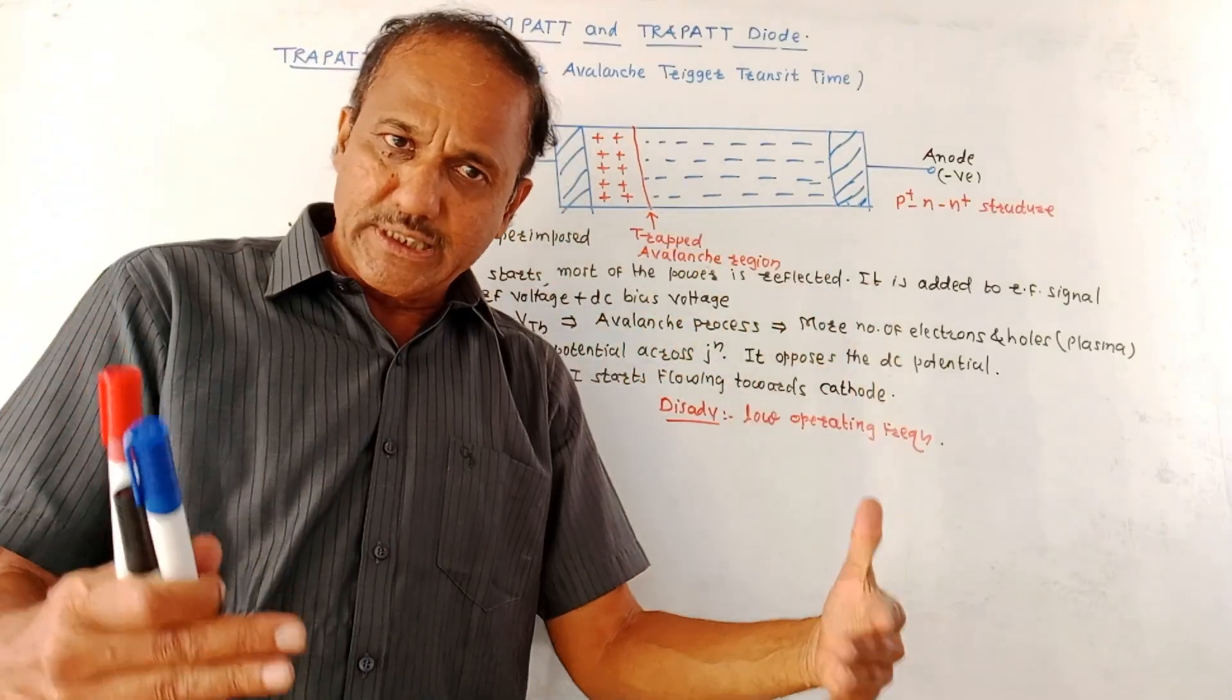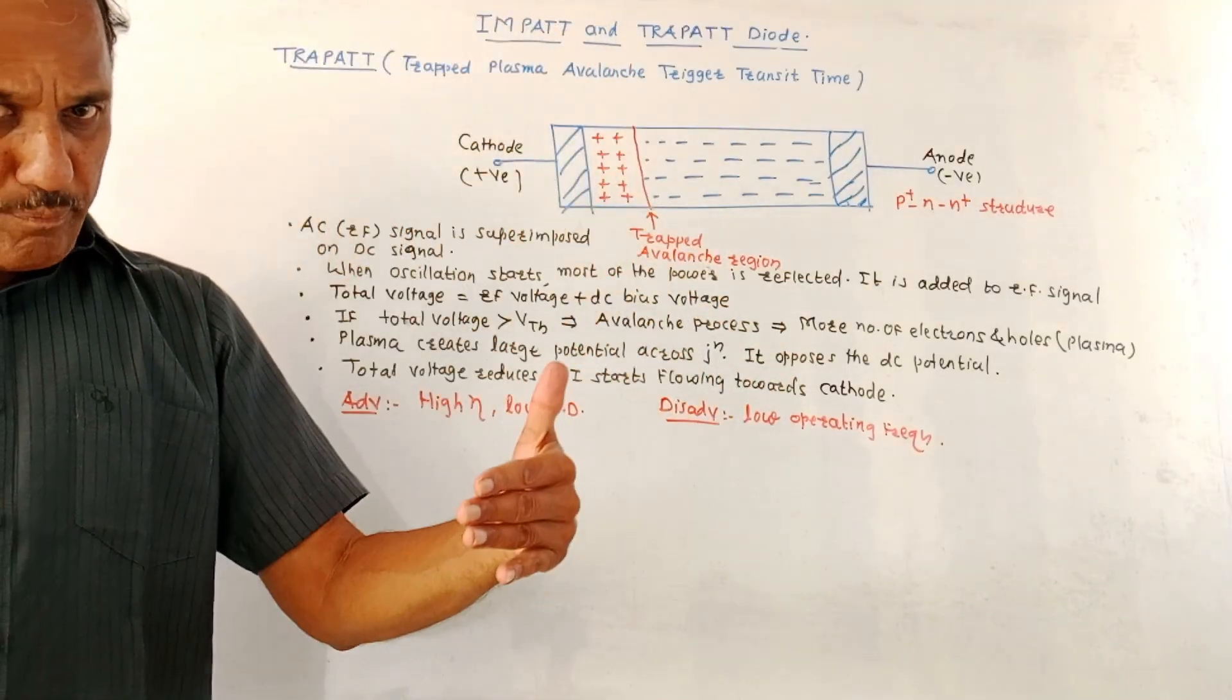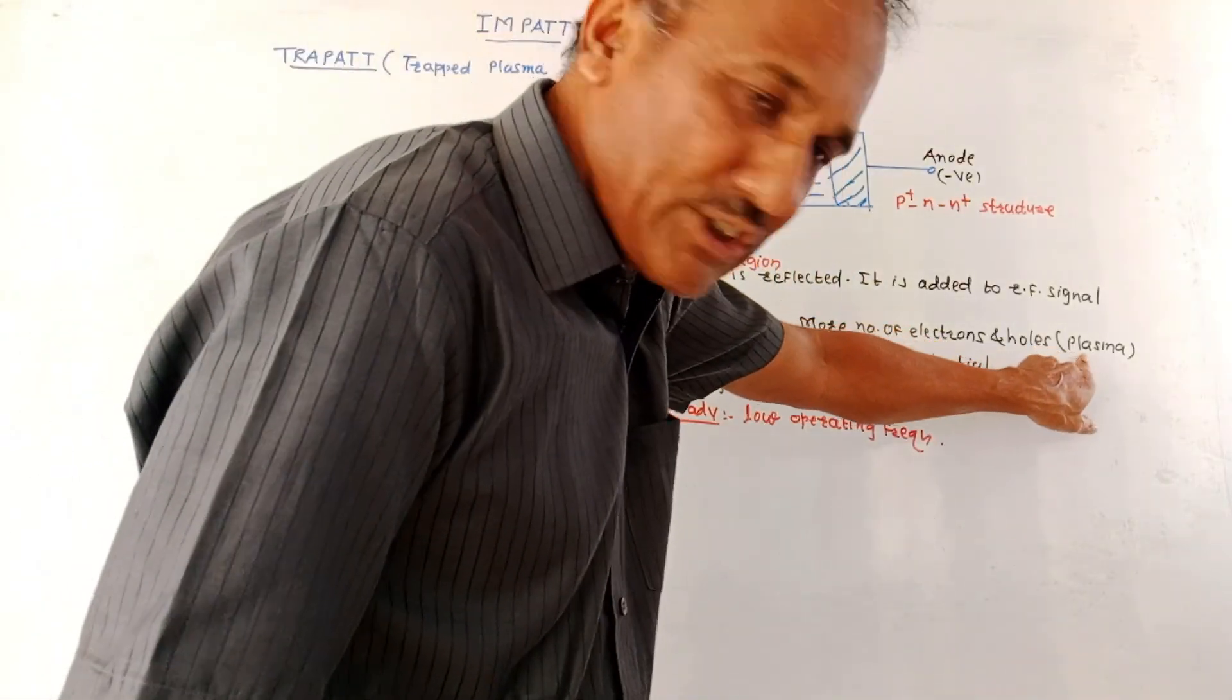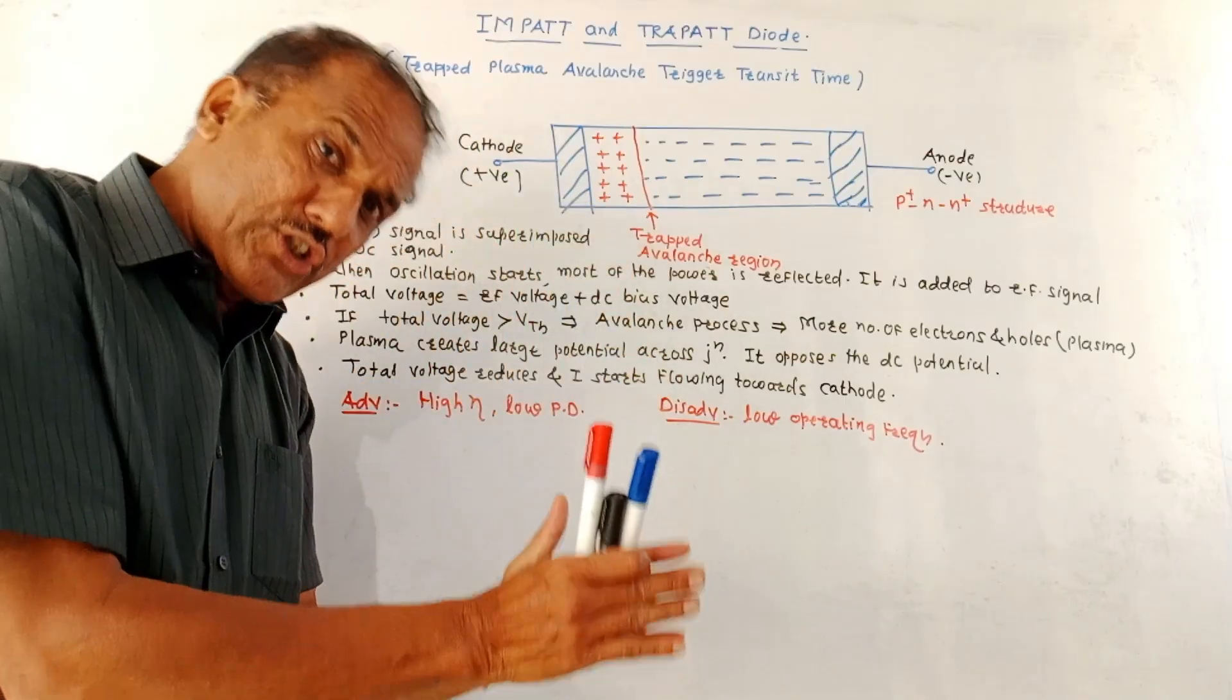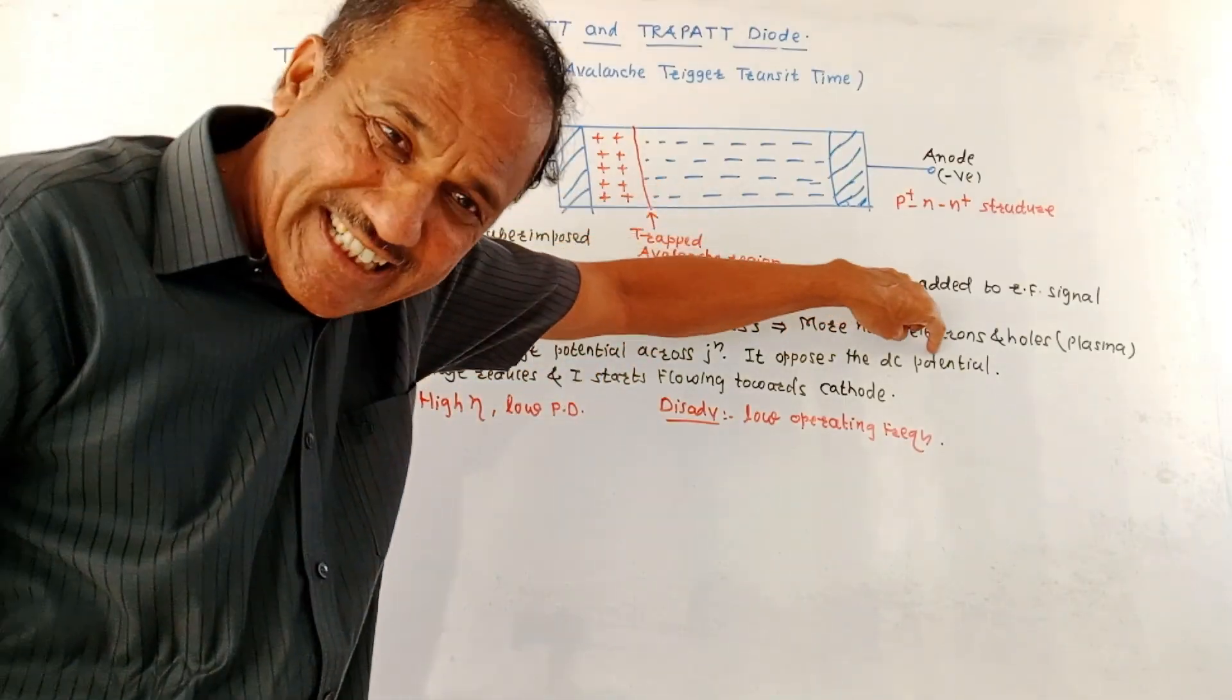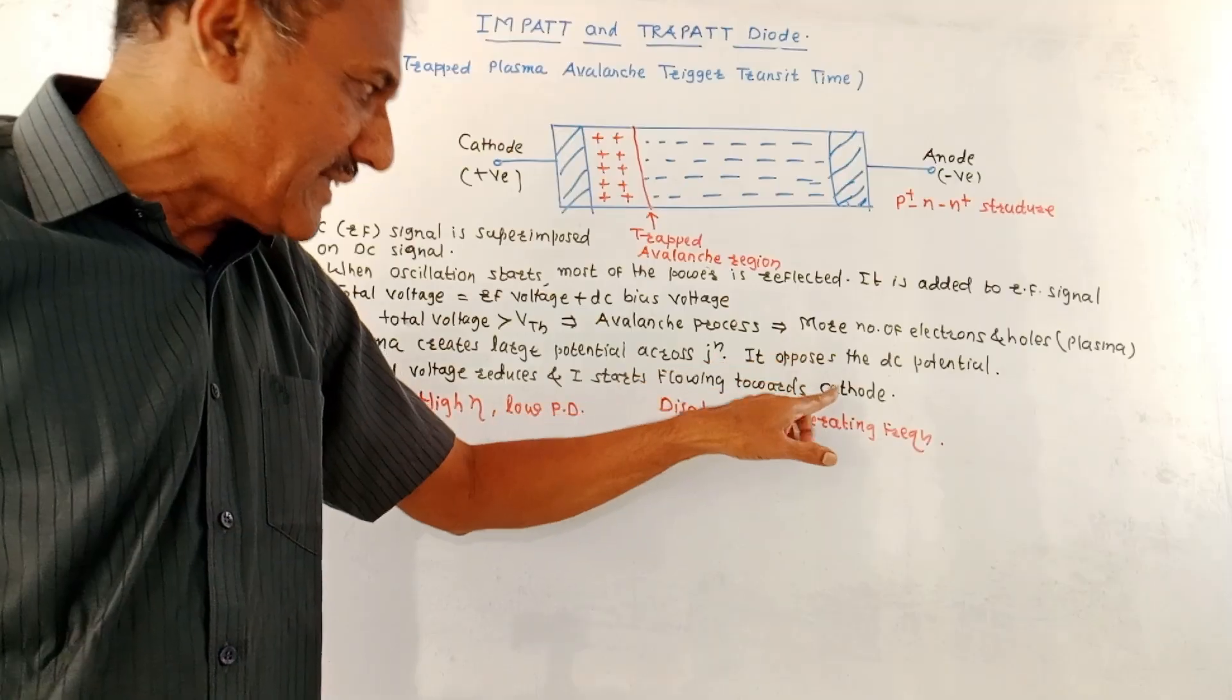We know that in case of avalanche process, more number of electron and hole pairs are generated. This more number of electron hole pairs which are generated during the avalanche process is called plasma. Now this plasma creates a large potential across the junction because of which the voltage gets reduced. That means this plasma opposes the DC potential. So the total voltage reduces and the current starts flowing towards the cathode.